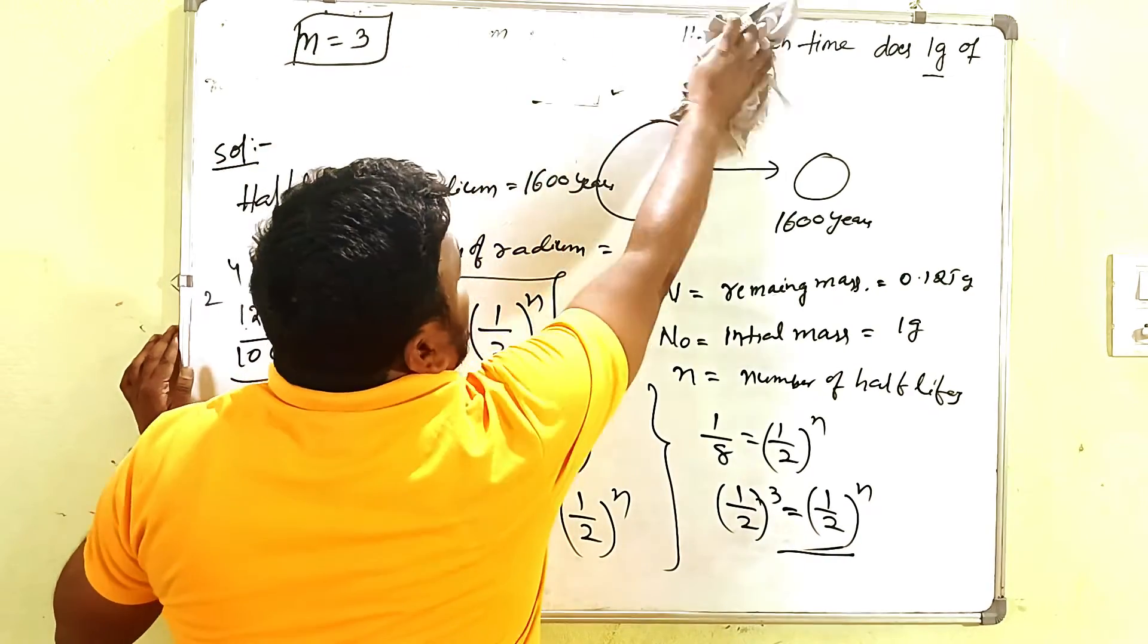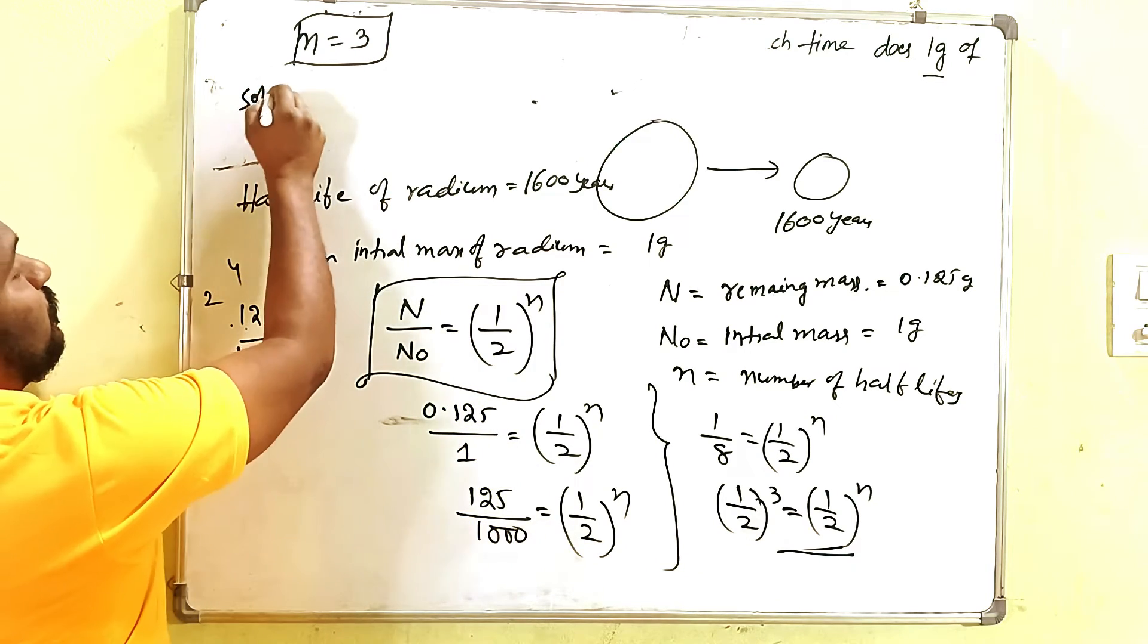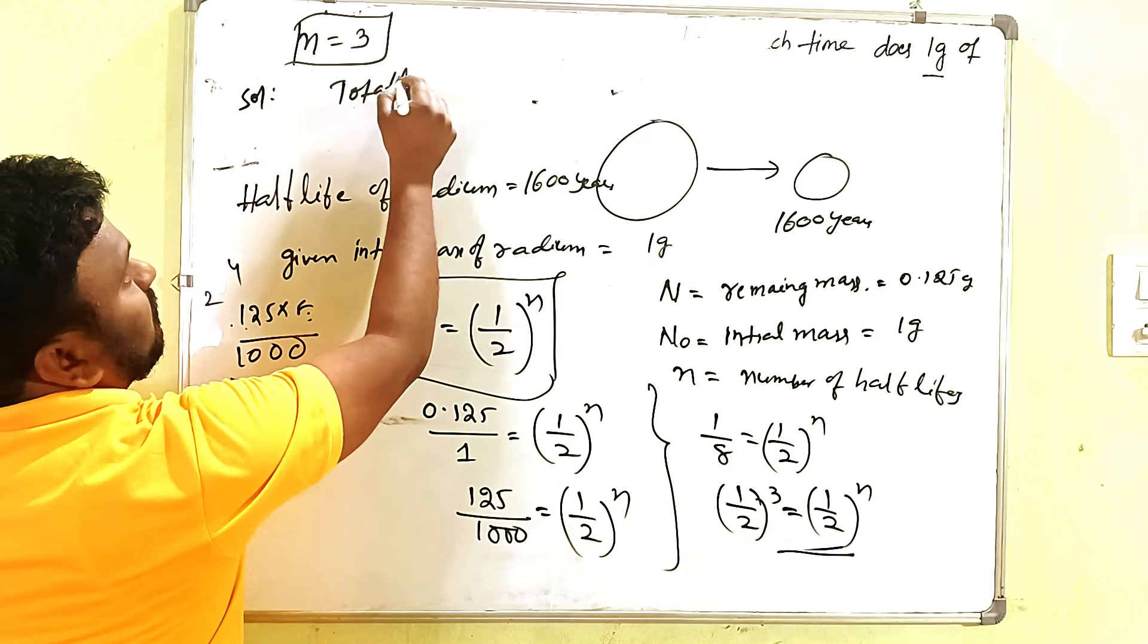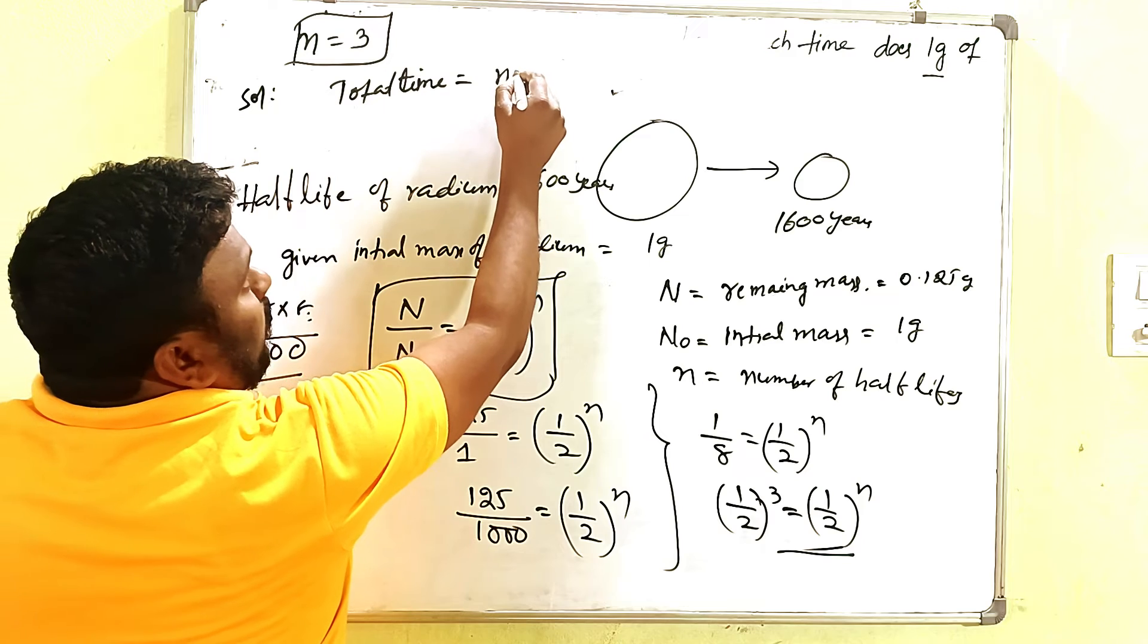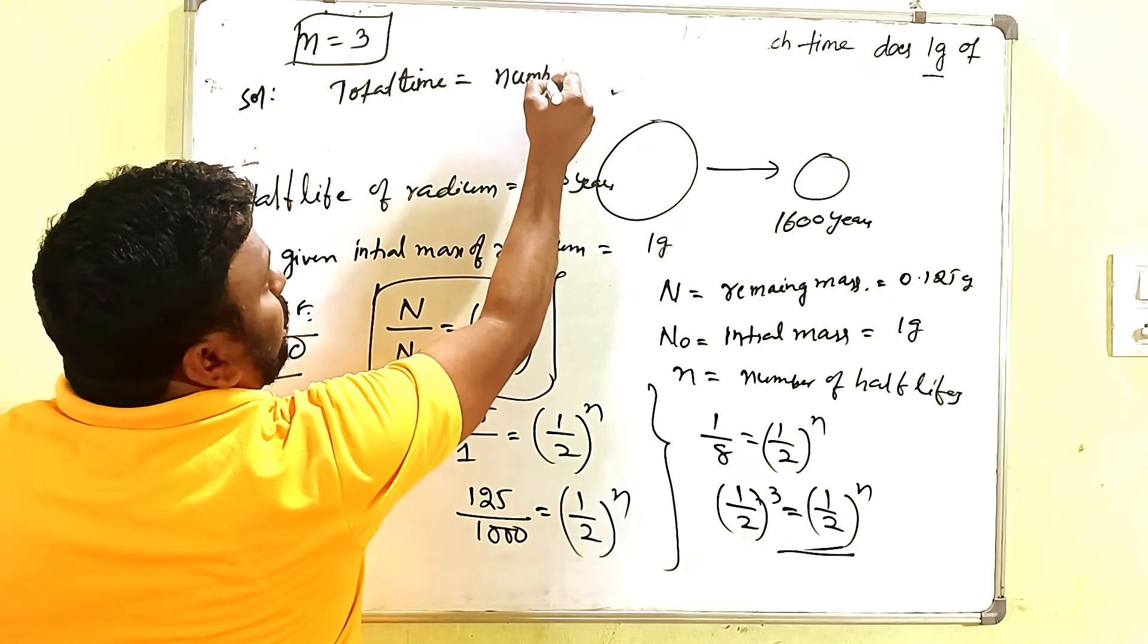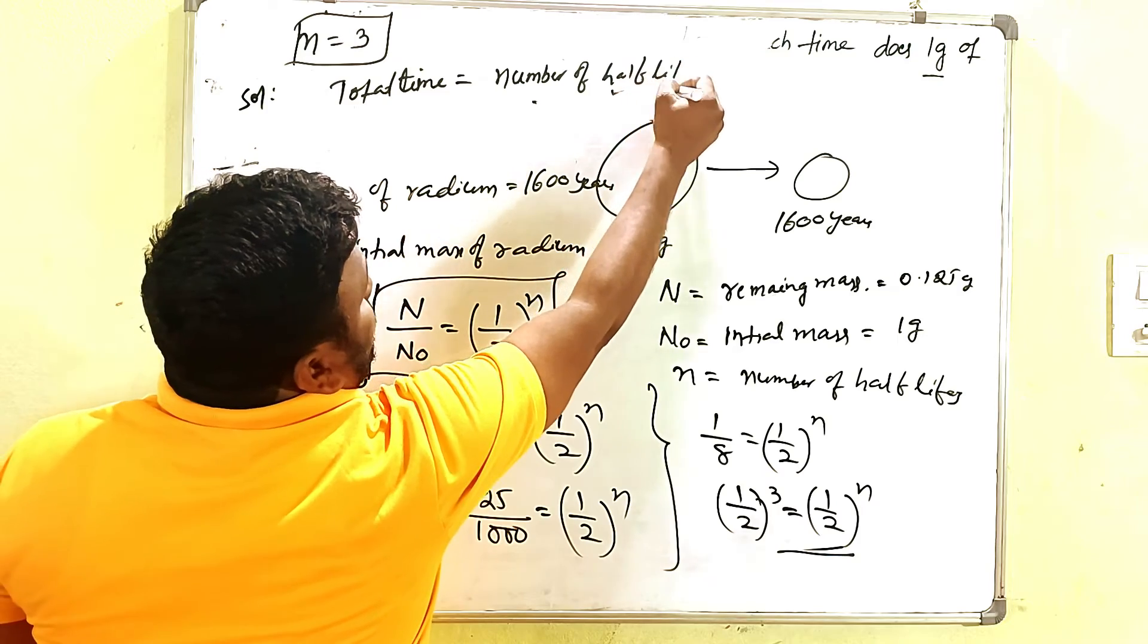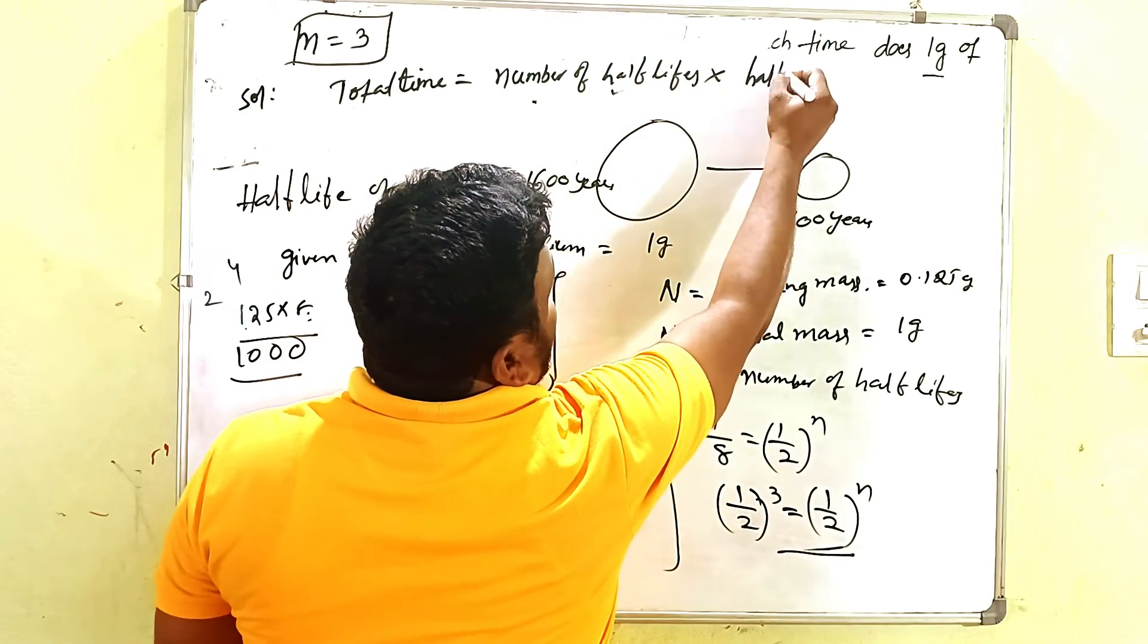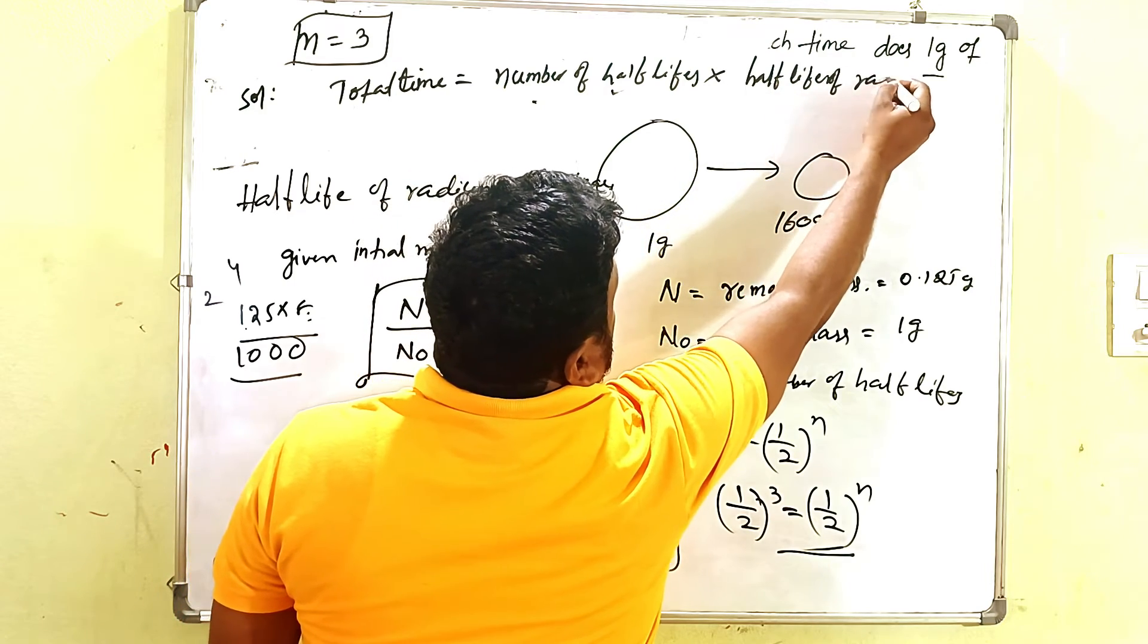Now here, the total time required formula should be given like this. Total time required equals number of half-lives into half-life of radium.